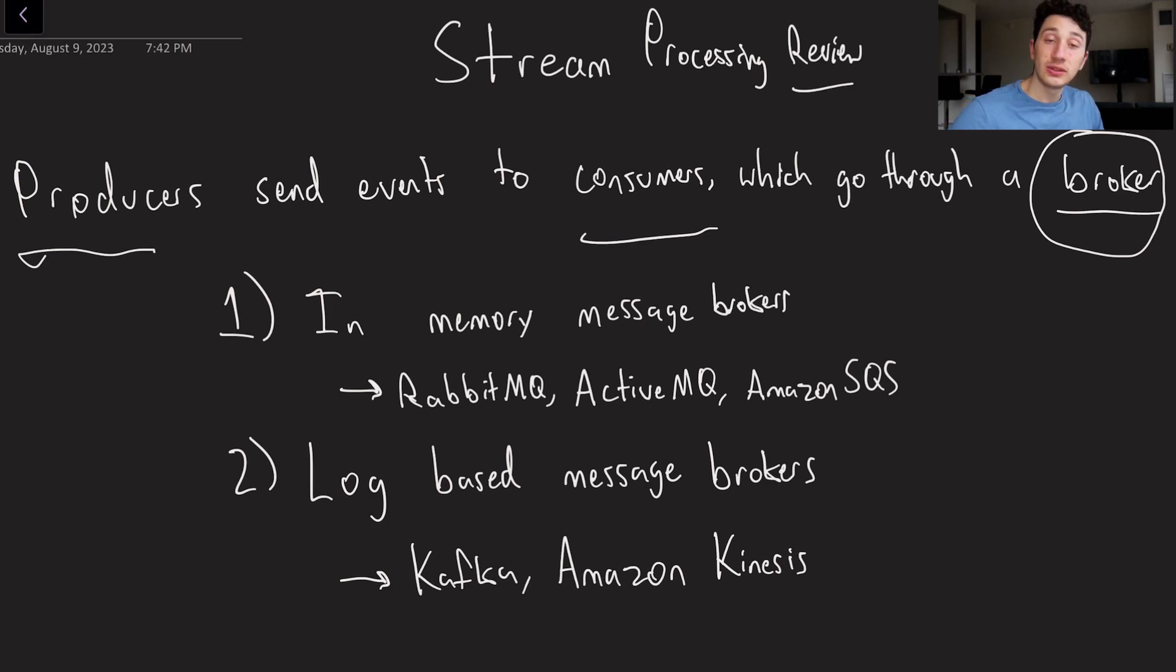So there are two main types of brokers that we're going to talk about today. They've got two fundamentally different types of architectures. And those are in-memory message brokers, right over here, and also log-based message brokers. So as you can see, I've listed a few different examples of implementations of these. So if you hear someone talk about Kafka, for example, that is a log-based message broker.